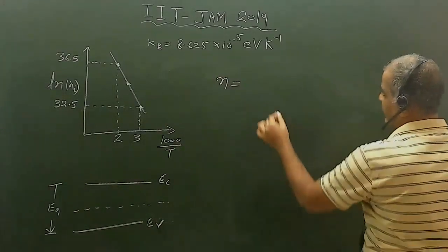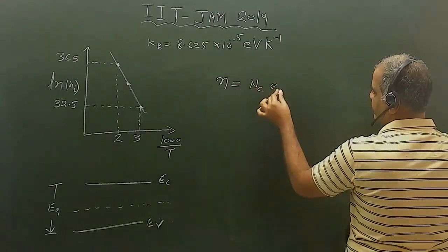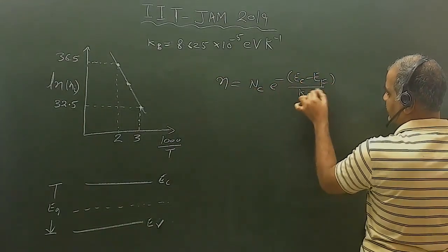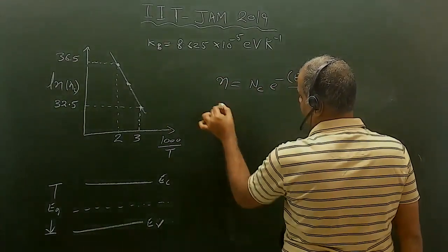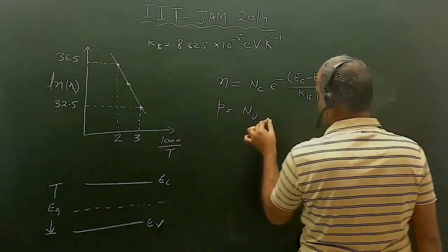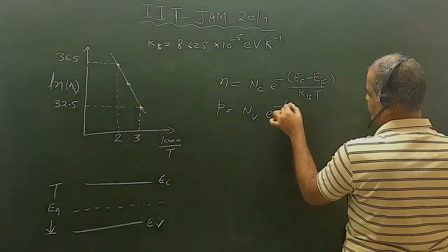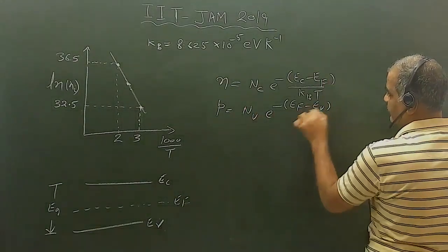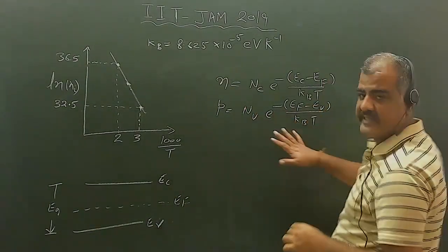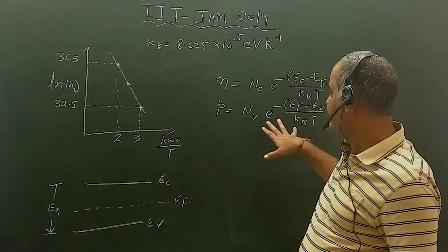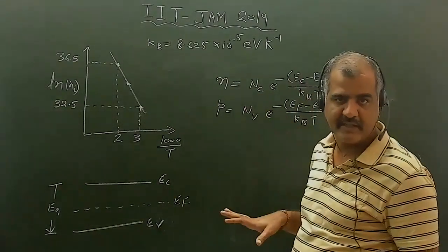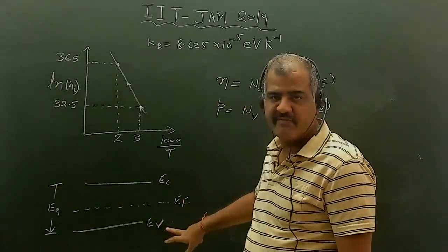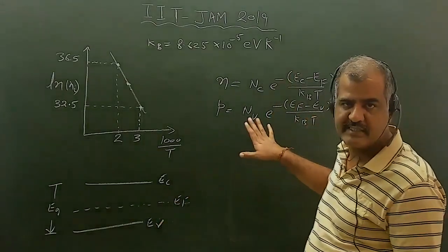The concentration of electrons in the conduction band is given by n = Nc · exp(-(Ec - Ef) / kT), where Nc is a constant. Similarly, the concentration of holes is given by p = Nv · exp(-(Ef - Ev) / kT). These are the general expressions for carrier concentration regardless of whether it is an intrinsic or extrinsic semiconductor, because doping does not change the positions of the conduction or valence bands.